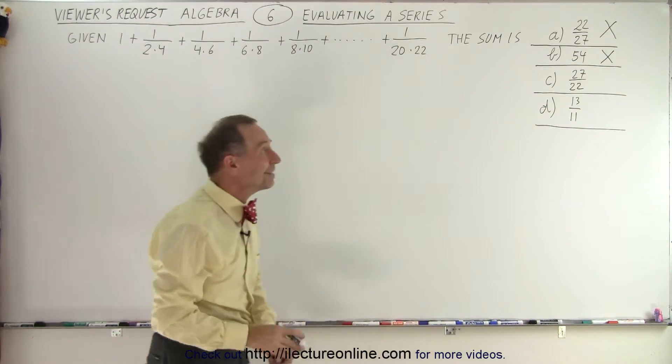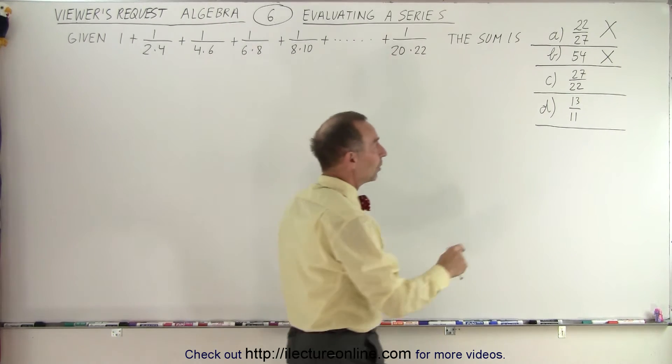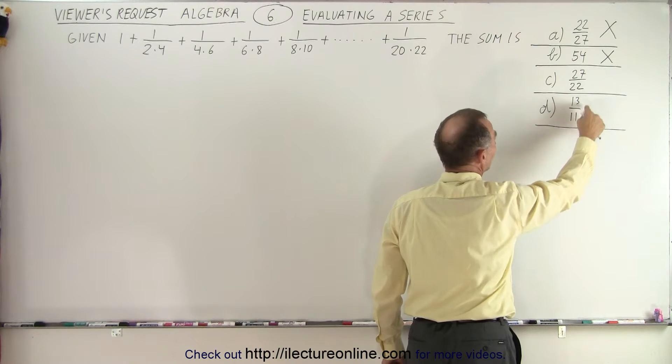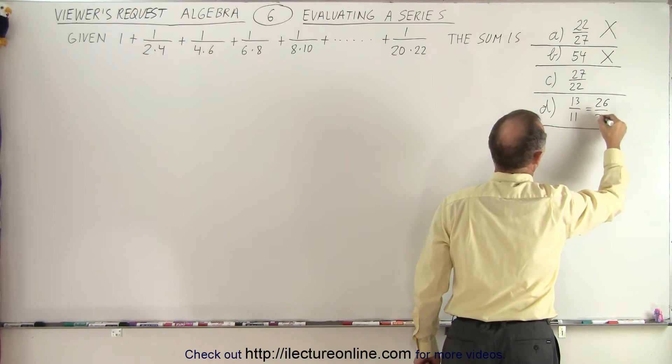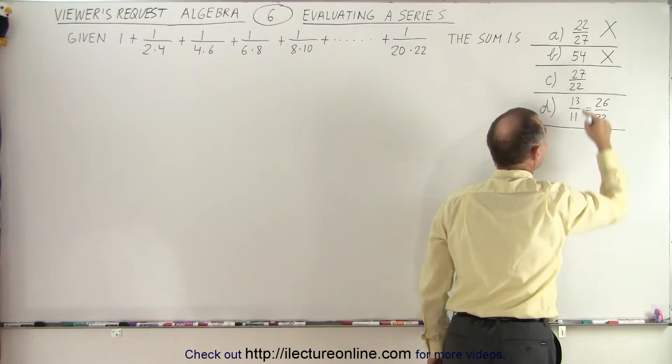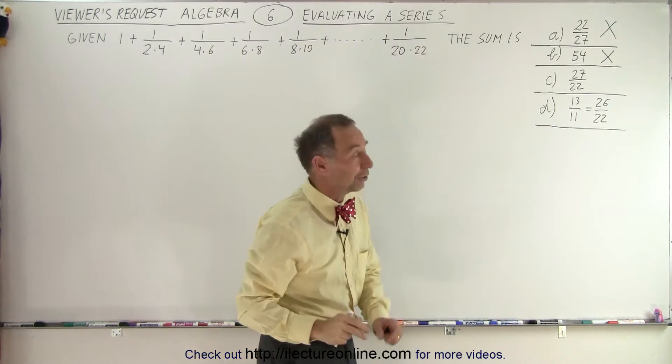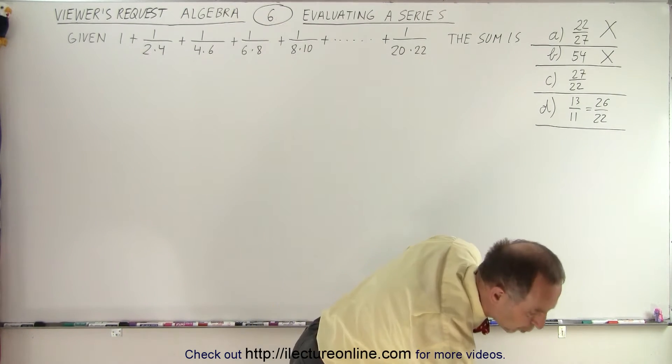The only two left is C and D, and they're very close in value. Notice when you double the numerator and denominator, you get 26 over 22. So this is equal to 26 over 22. So it's either 26 over 22 or 27 over 22. And they're very close together. But let's grab a calculator and evaluate those two.